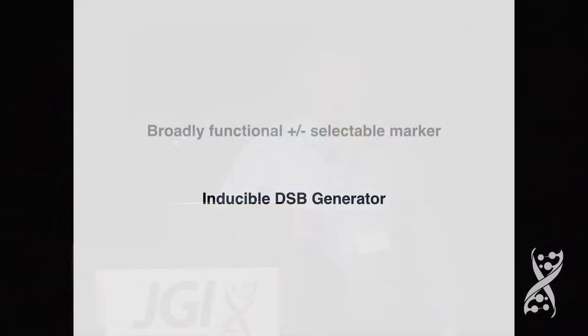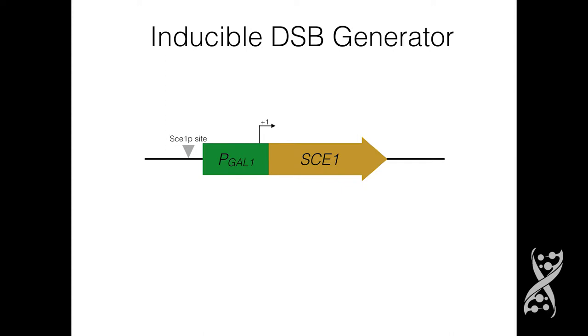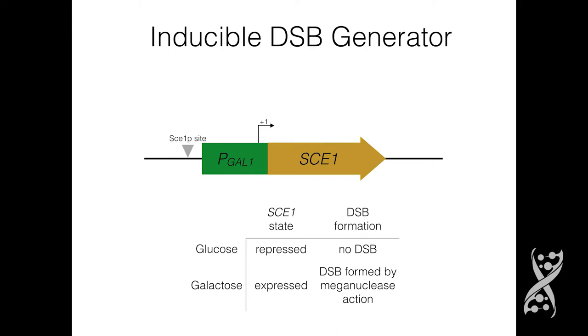Now that I had a positive and negative selectable marker available, I went about finding a good double-strand break generator. The one I chose was fairly well characterized in the Saccharomyces cerevisiae system — the meganuclease SCI-I attached to a galactose-inducible promoter. The meganuclease has a recognition sequence artificially placed on the opposite side of the promoter. When cells are grown on glucose, expression of SCI-I is actively repressed and no double-strand break is formed. However, when placed on galactose, SCI-I protein is expressed and double-strand breaks are formed. I fused this part to the thymidine kinase marker to form the HERP cassette, HERP 1.0 in particular.